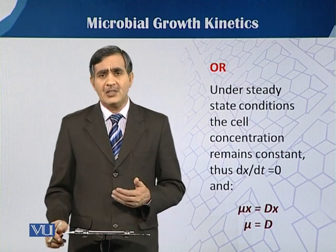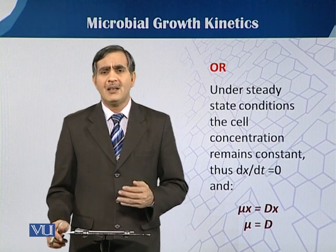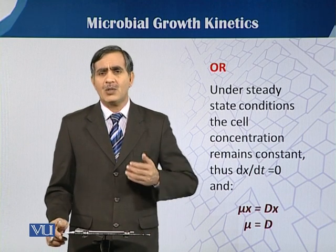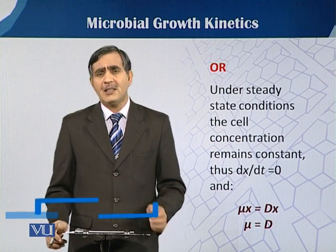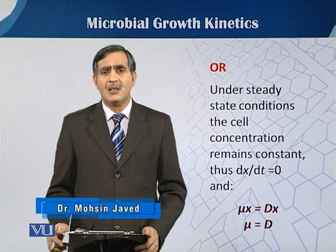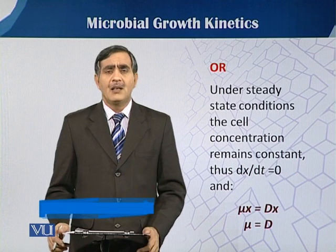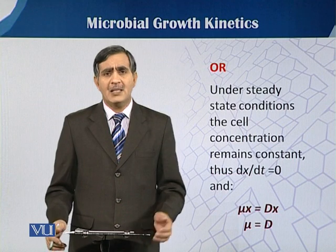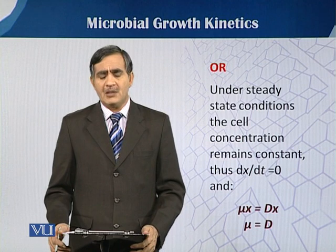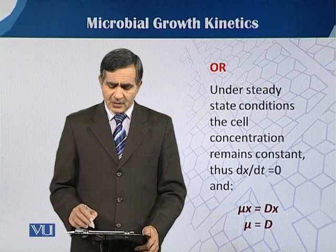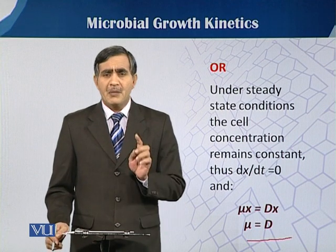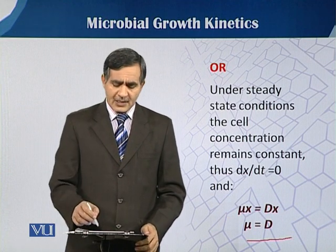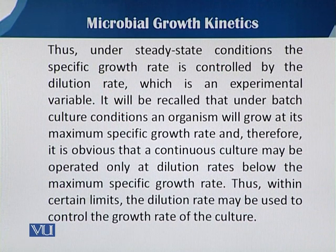Under steady state conditions, the cell concentration remains the same — there is no further change in cell mass concentration. We can write that dx/dt equals zero. By substituting this into the previous equation, mu·x minus D·x equals zero, and therefore mu equals D. Under steady state conditions, the specific growth rate is controlled by the dilution rate, which is an experimental variable we control when running the fermentation in continuous mode.